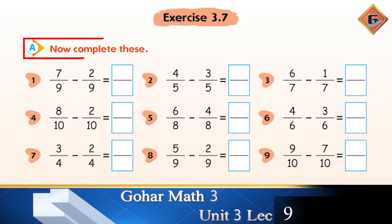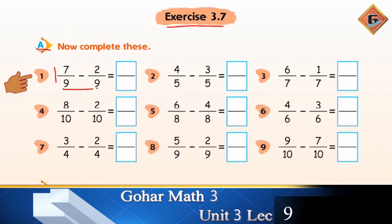Let's do this Exercise 3.7. First question is: Now complete these. 7 over 9 minus 2 over 9. Aapka denominator, it's going to remain same, so we are going to write it. Ab aapne 7 mein se 2 ko subtract karna hai. 7 mein se, agar aap 2 kisi ko de dein ya someone takes them away from you, you are left with 5.